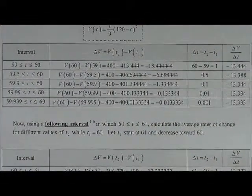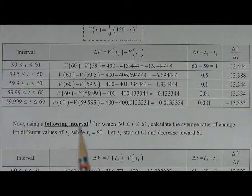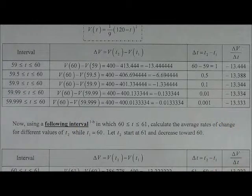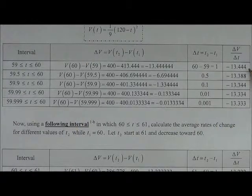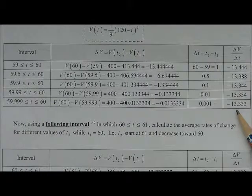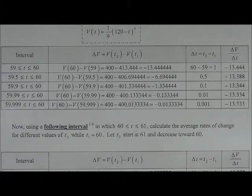Okay, so after you would have paused the video, you would have got this mess of numbers here, and so we end up seeing that the delta V over delta T is sort of zeroing in on negative 13.333.